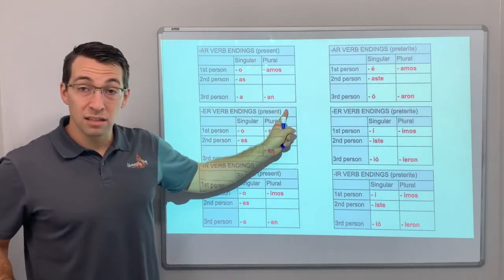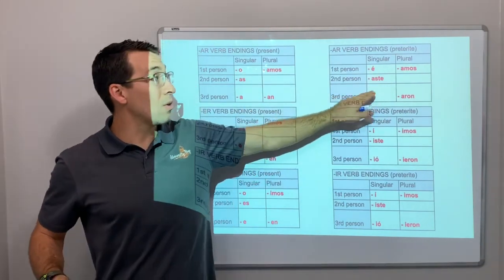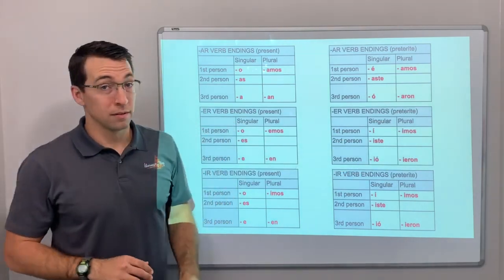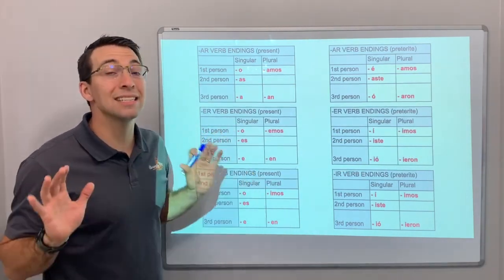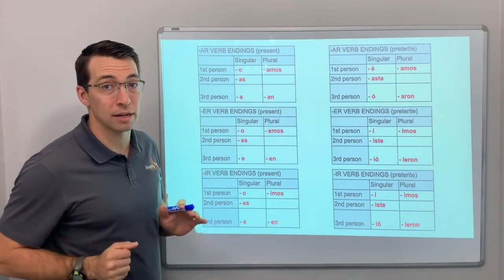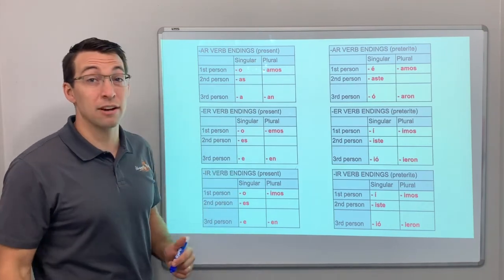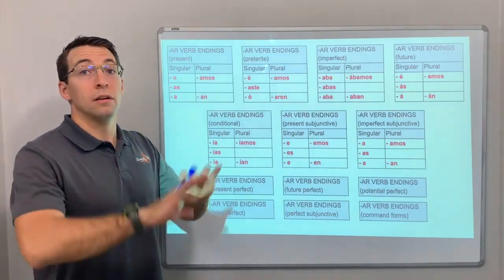So, present tense versus the preterite tense. O, as, a, amos, an. E, as, te, o, amos, aron. And notice, this is an introduction. This is not something you've got to learn and memorize right now. But see, there's a pattern. There's a huge pattern.